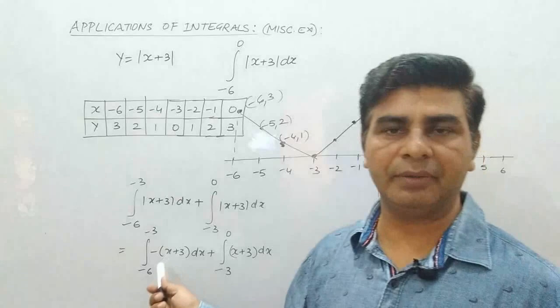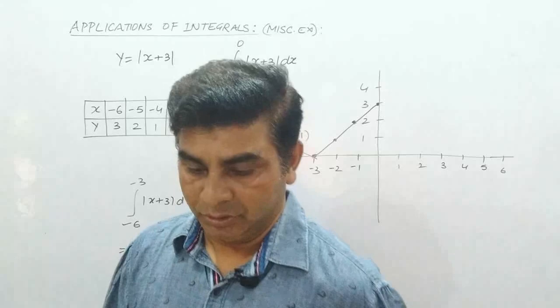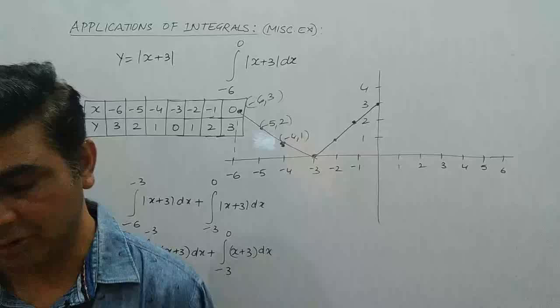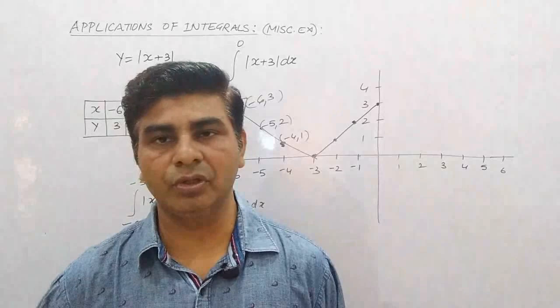So this was question number 4. Question number 5: we need to find the area bounded by the curve y is equal to sin x, in between 0 to 2π. The limits are already given to find the area of the trigonometric function sin x.